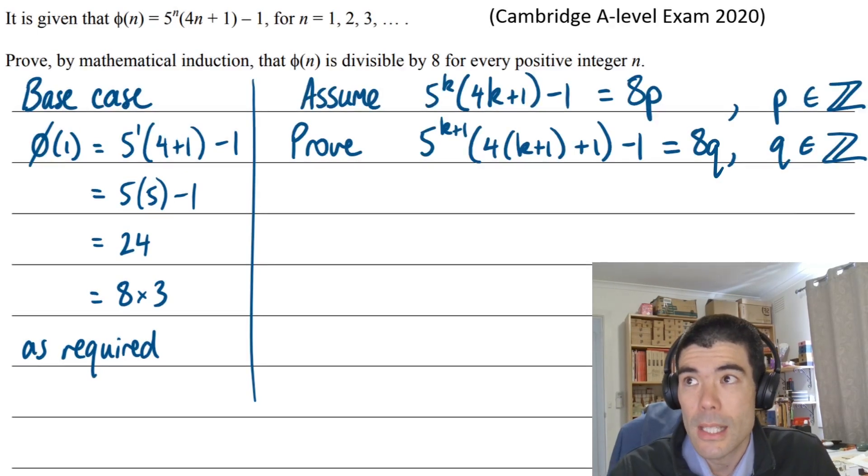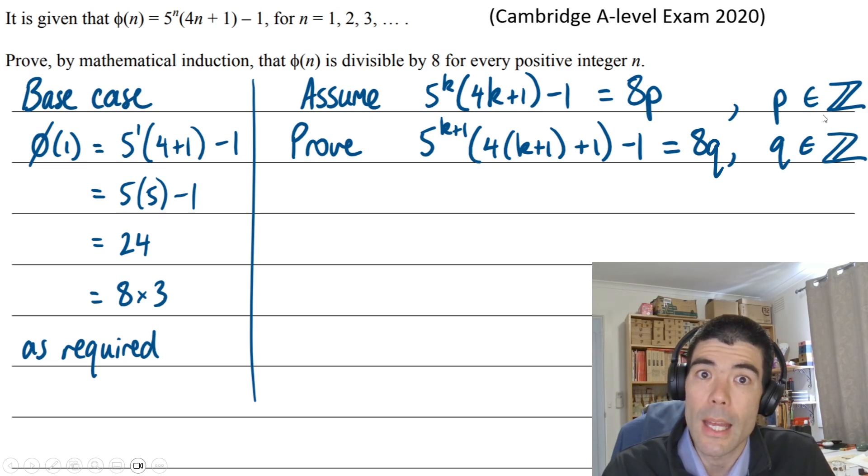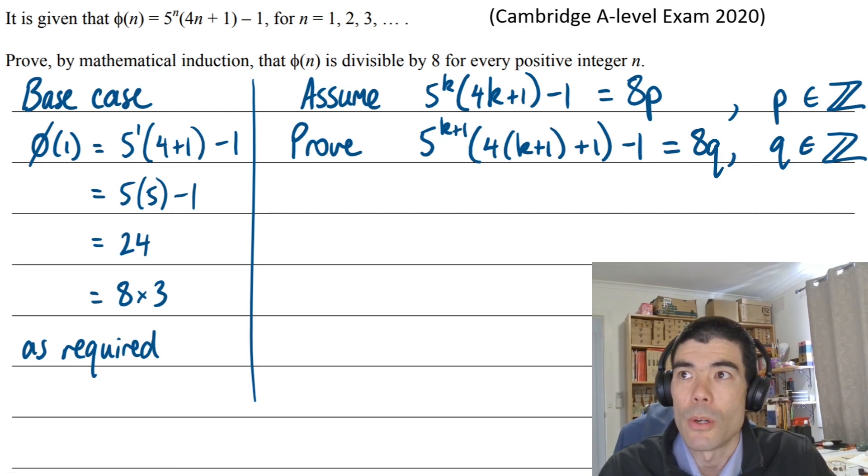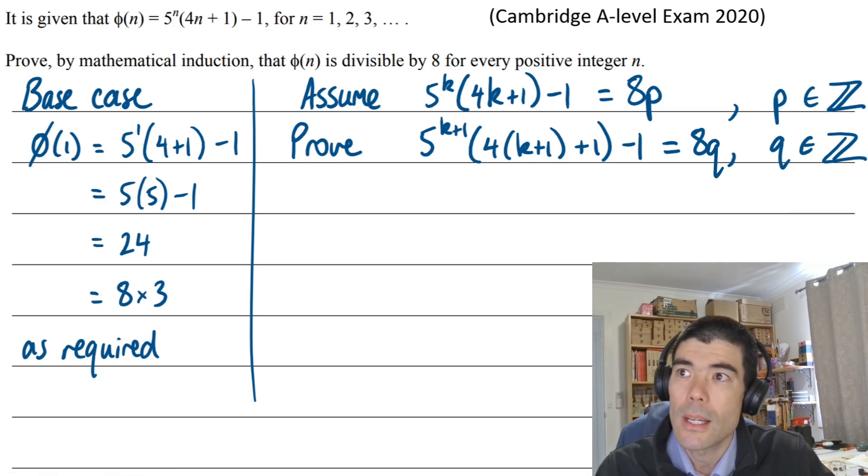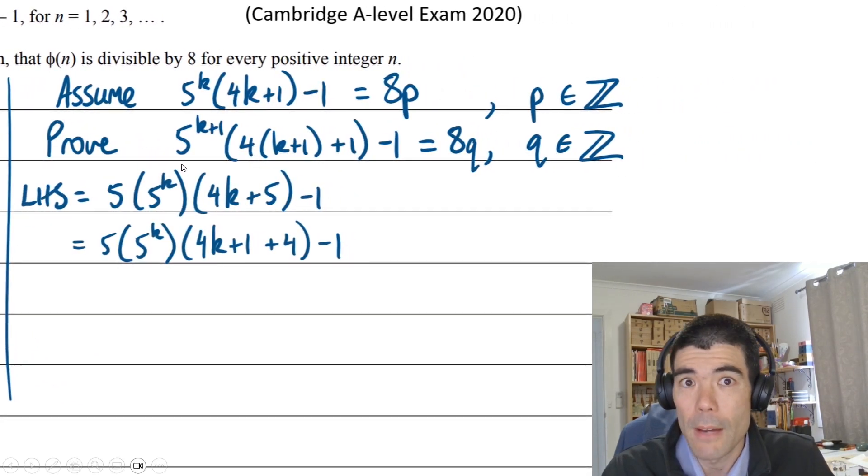Next with proof by induction, we're going to set up our assumption. We're going to assume that for n equals some value, say k, this thing is going to be a multiple of 8. So we can say it's 8 times p, where p is an integer. What we need to prove then is that for the next value of n, k plus 1, it's also going to be a multiple of 8. Probably avoid using the same letter because if this one is 8p, this one is not necessarily going to be 8p. We always need to use the assumption. We're looking at this expression for φ(k+1), and we're thinking, how can we use the fact that this is a multiple of 8?